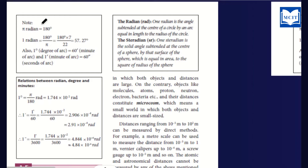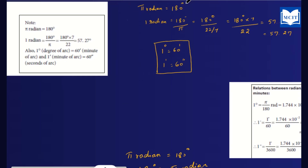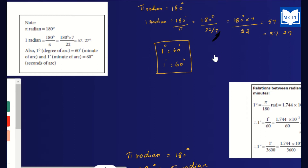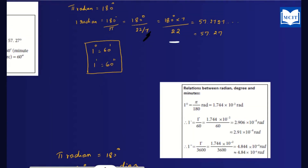Now, the relation between radian, degree, and minutes. Pi radian equals 180 degrees. So 1 radian equals 180 divided by pi. Using pi equal to 22 by 7, that gives 180 degrees into 7 divided by 22, which simplifies to 57.27 degrees. So one radian value is 57.27 degrees.